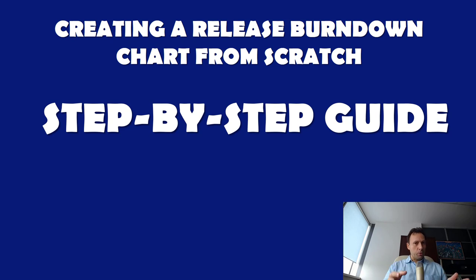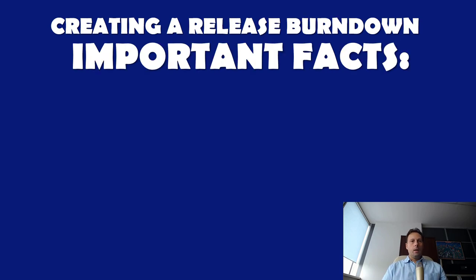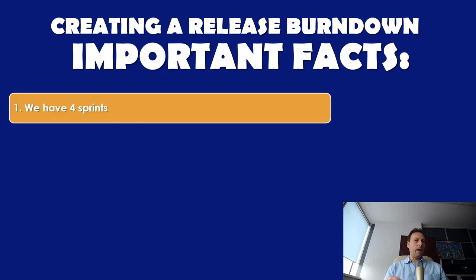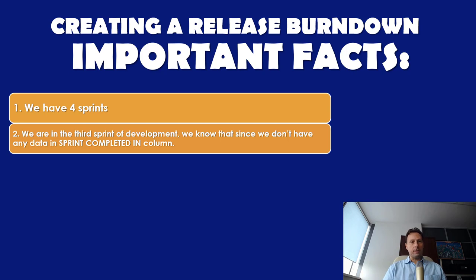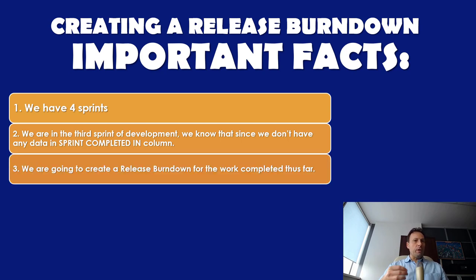Please go to the resource section and open the release plan information, which is a Microsoft Excel document, and see what is in there and what are the inputs. Here are the important facts for our assignment. We have four sprints. We are in the third sprint of our development, and we know that since we don't have any data in the sprint completed column, which I am going to show you in just a second. We are going to create a release burndown for the work completed thus far. This is very important.